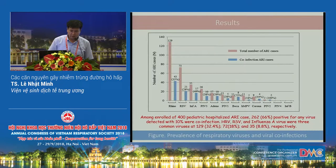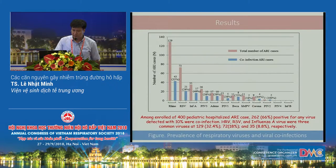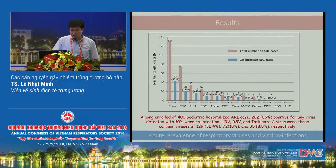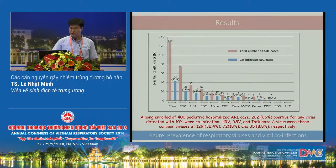In total, we collected 400 pediatric ARI cases hospitalized with ARI symptoms. We detected 66% positive for any virus, with 10% co-infection. Human rhinovirus, RSV, and influenza were the three most common viruses detected, accounting for approximately 33% to 80% of detections.